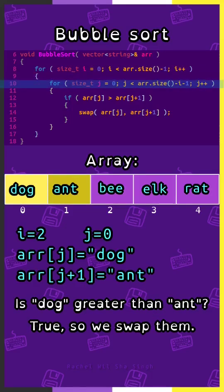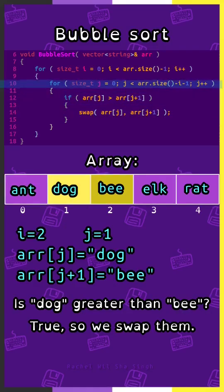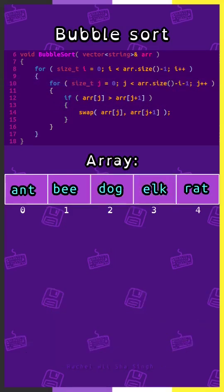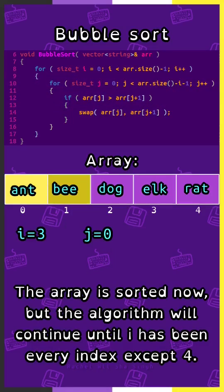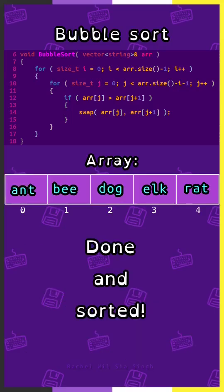i is 2, j is 0. Array sub j is dog, array sub j plus 1 is ant. Is dog greater than ant? True. Swap. j is 1. Is dog greater than b? True. Swap. The array is sorted now, but the algorithm will continue until i has been every index except 4. Now it is done and sorted.